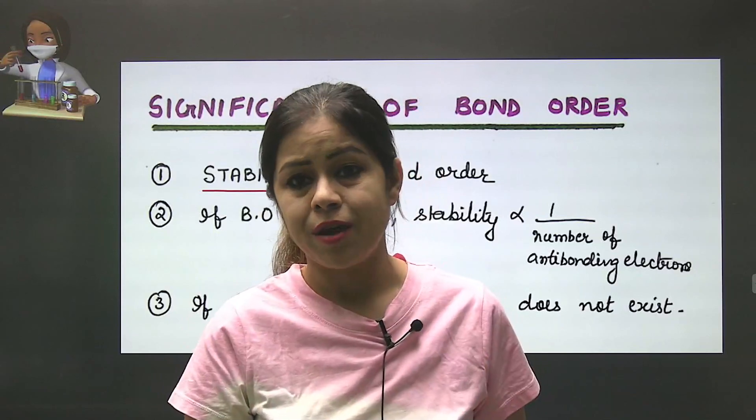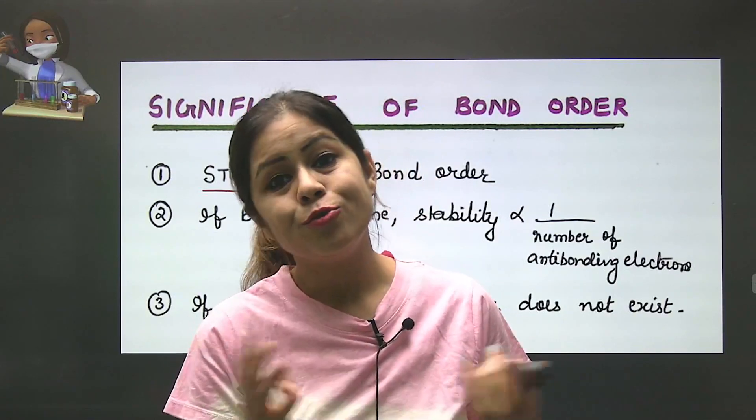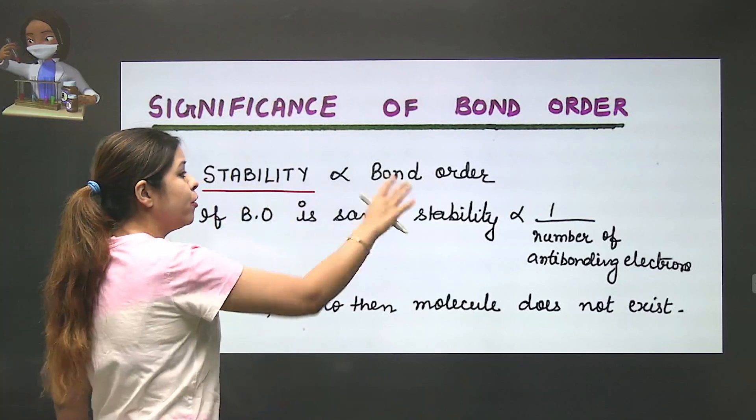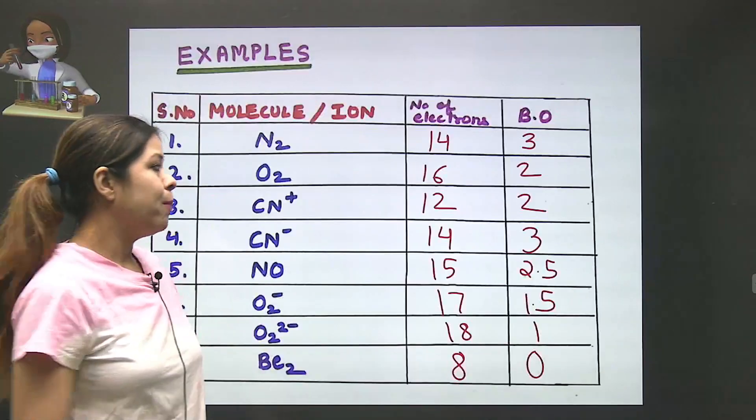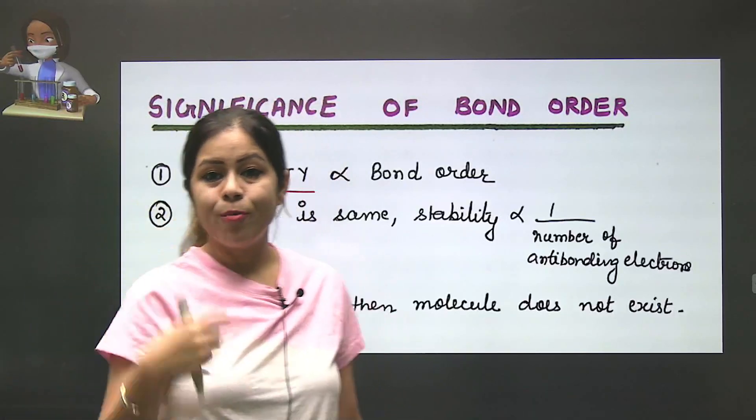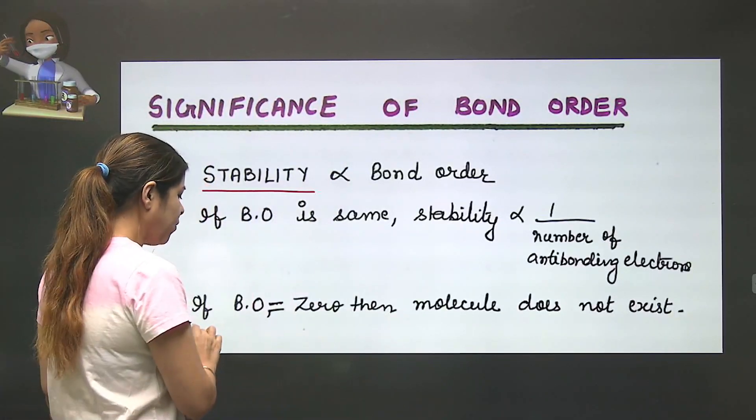They give you three or four sets, like O2, O2+, O2-, O2 2-, or N2, N2+, N2-, N2 2-. This is the same question in term 1. This is a stability question. Stability is directly proportional to bond order.